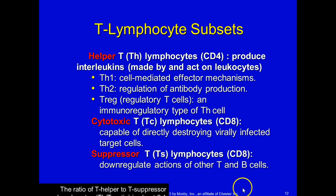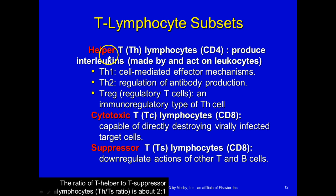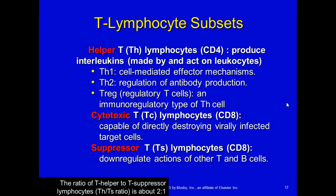Looking at the different T cell subsets: helper T cells are CD4 — a memory trick is that HELP has four letters, matching CD4. These produce interleukins. There are subtypes: T helper 1 has effector mechanisms, T helper 2 regulates antibody production, and T regulatory is an immunoregulatory type that keeps things under control. The cytotoxic or CD8 cell is capable of destroying virally infected cells, and the suppressor cell down-regulates other T and B cells. Suppressors are CD8, helpers are CD4 — important when we discuss HIV.